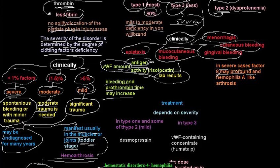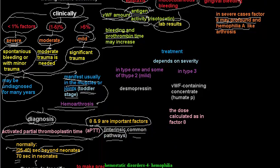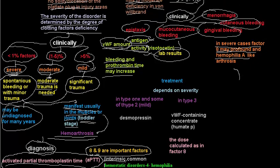In severe cases, Factor 8 may be profoundly decreased, and the patient may present similarly to hemophilia A. However, it is not hemophilia A — hemophilia A is an X-linked disease. This resemblance to hemophilia A only occurs in severe cases of von Willebrand disease.